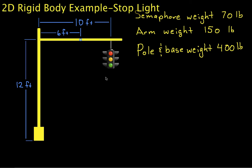Welcome to this video in which we will examine a rigid body, in this case consisting of a stoplight, and we will try to find the forces and couples at the point where this arm which holds up the semaphore—that's a fancy name for the lights—is attached to the pole, and then also where the pole is attached to the ground.